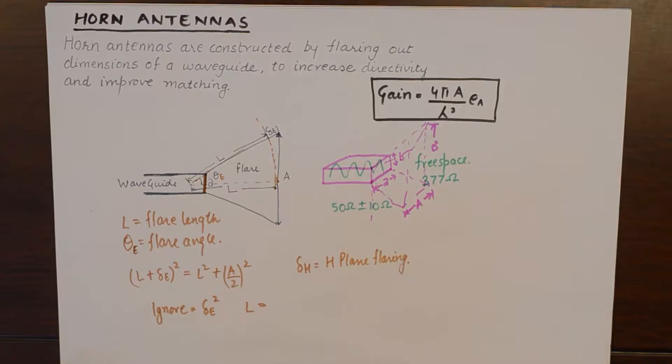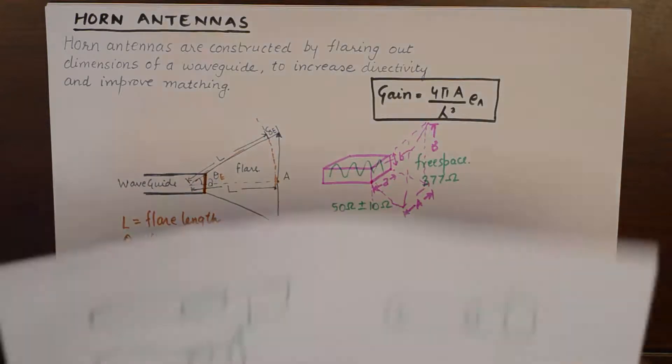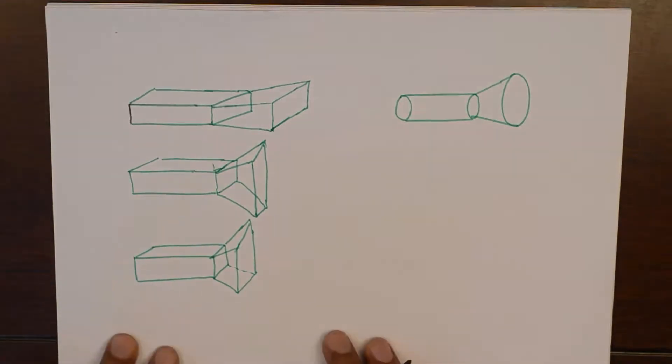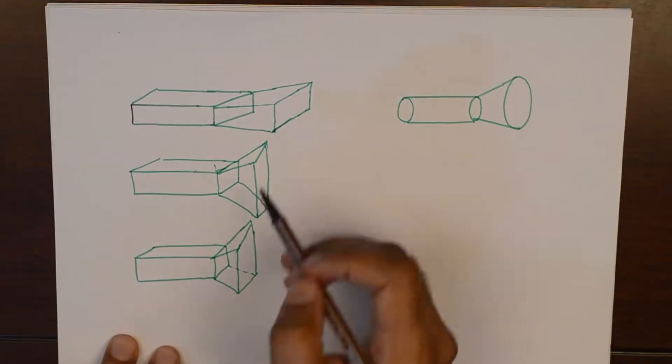Now, depending upon what dimension do we flare, there are different types of horn antennas. For example, we can simply increase the broader dimension of a waveguide. We can simply keep on increasing A, keeping B constant. I have got some illustrations. Now, what I am talking about is this case.